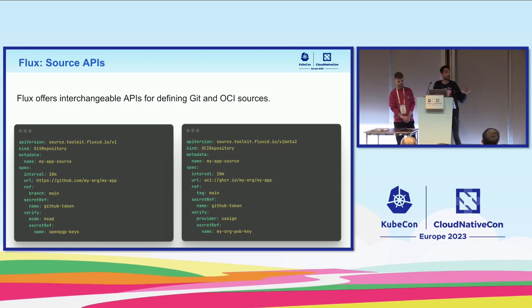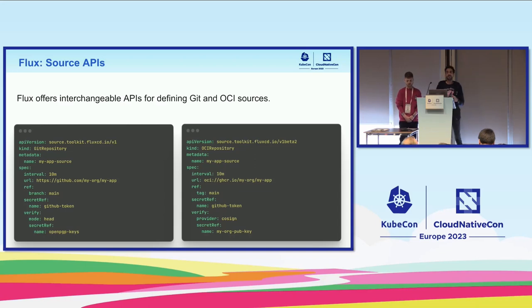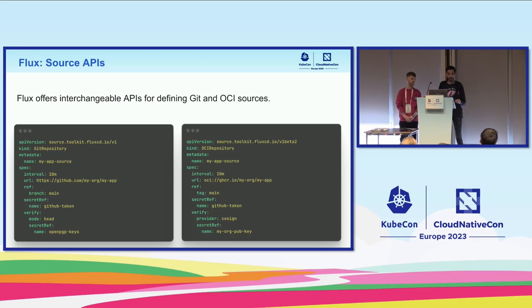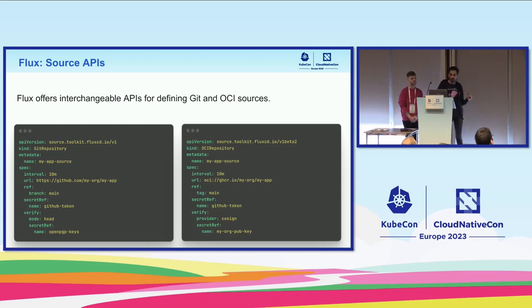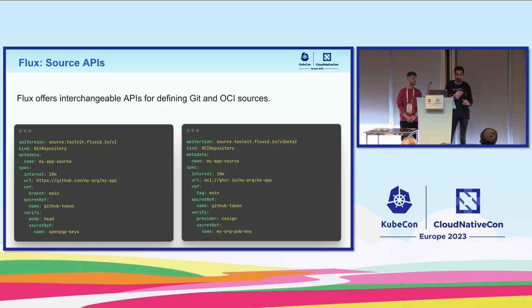The major changes are in terms of verification of the integrity of the artifact. With Git you're forced into OpenPGP for signing, which most organizations don't use and is quite hard to adopt. For the OCI repository, you can integrate with Cosign — you can sign artifacts with Cosign private keys, but you can also use Cosign keyless. There aren't many changes, and you can quickly switch between them. Now I'm going to ask Hide to walk us through various API options and how we can use OCI repositories in Flux.